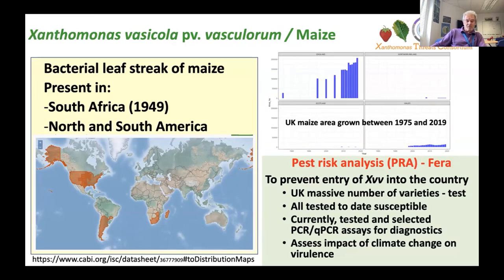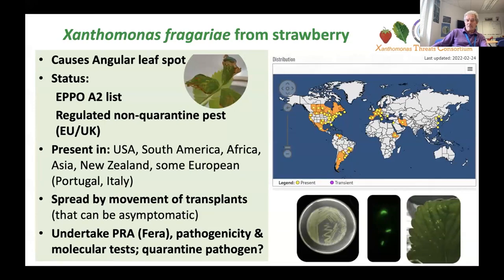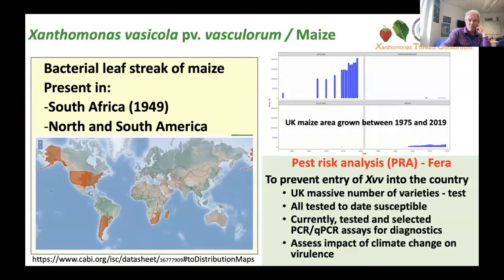We're developing the pest risk analysis and testing the maize varieties that should be used in UK agriculture — predominantly in England because of the climate. We're selecting these races using PCR, qPCR, and doing glasshouse pathotesting with the pathogen. The strawberry Xanthomonas has EPPO A2 list status — it's a regulated non-quarantine pest in the EU and UK, present in New Zealand, the USA, and some European countries. It's predominantly spread by movement of strawberry transplants, which are usually asymptomatic. FERA is looking at pathogenicity and developing molecular tests, and there's a question whether this needs to become a quarantine pathogen.